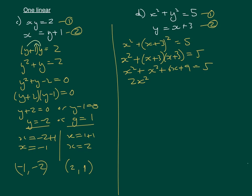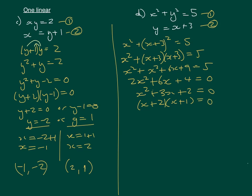We get 2x squared plus 6x plus 4 equals 0. Because everything is even, we divide through by 2 to get a monic quadratic: x squared plus 3x plus 2 equals 0. Two numbers that multiply to give 2 and add to give 3 are 2 and 1, so (x plus 2)(x plus 1) equals 0, giving x equals minus 2 or x equals minus 1.